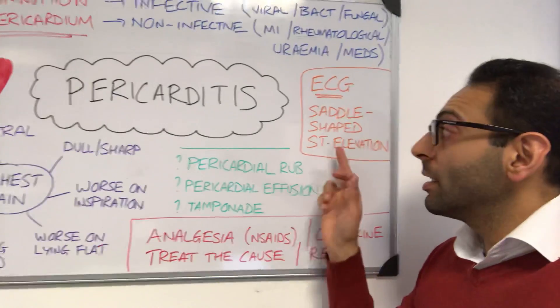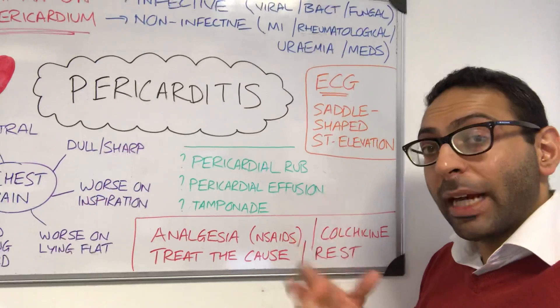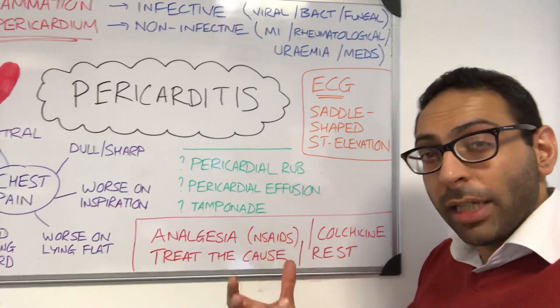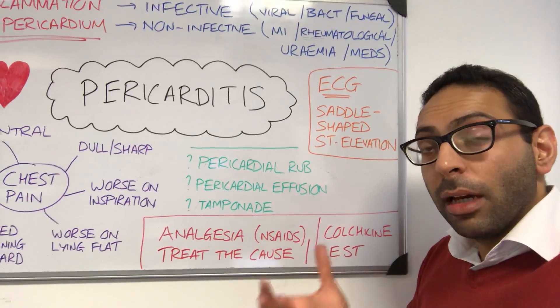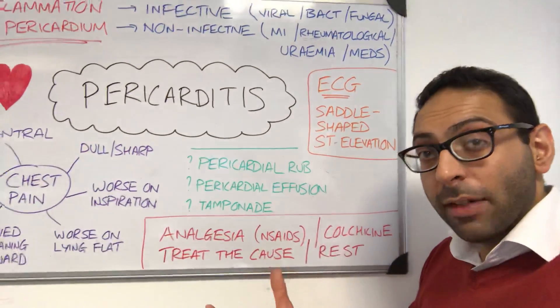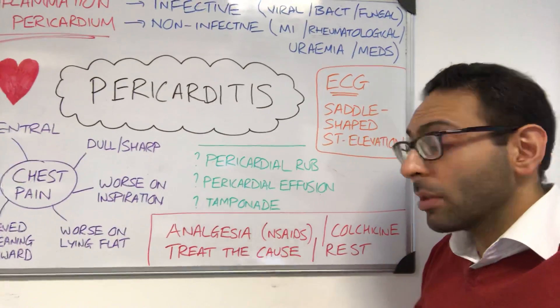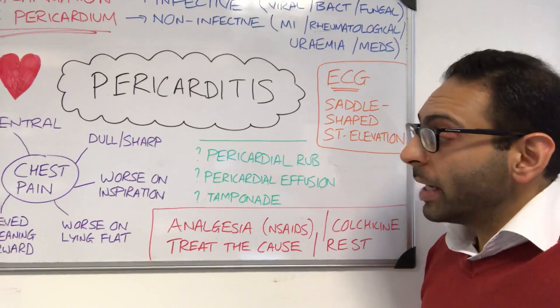ECG classic changes include saddle-shaped ST elevation, though other changes can occur. Blood markers show raised ESR and raised CRP, and a full blood count can show leukocytosis, among other changes.